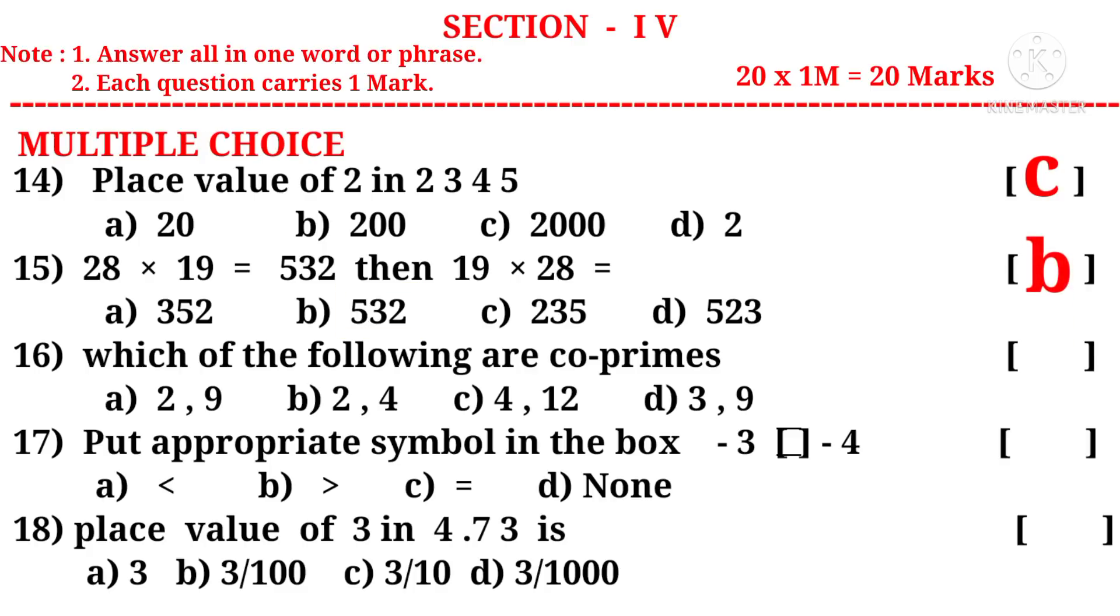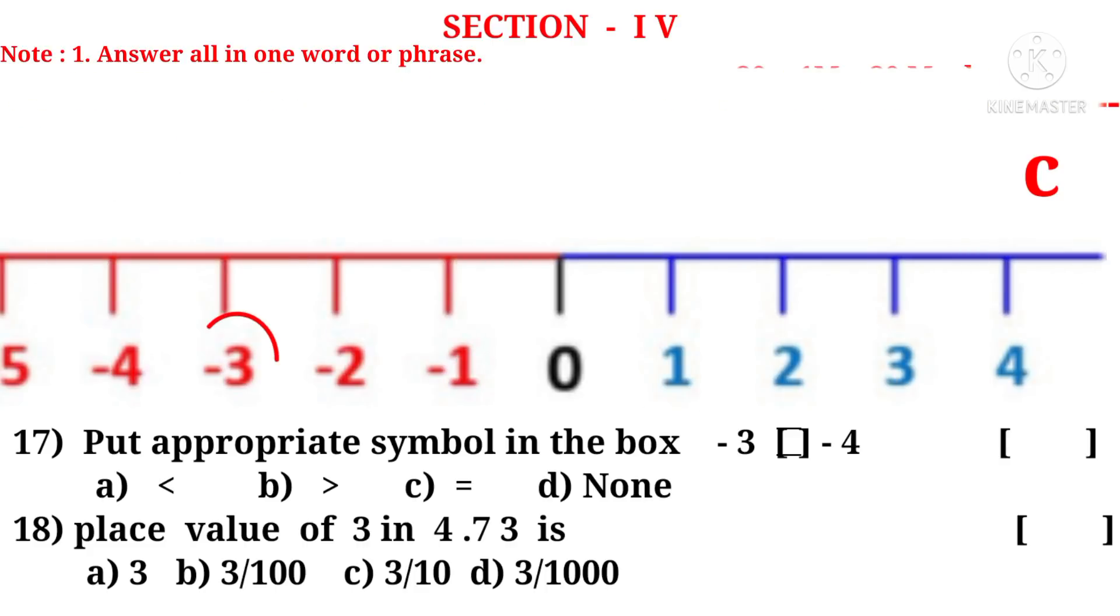Sixteen: Which of the following are co-primes? Observe the word co-primes means the numbers which have the only common divisor equal to 1. Here observe the numbers 2 and 9. Both are divisible by one and only number 1. And the remaining numbers are divisible by more than 1. So the correct choice is A. Now seventeen: Put appropriate symbol in the box. Minus 3 box minus 4. Observe the line of integers. Minus 3 is on the right side of minus 4. So minus 3 is greater than. So put greater than symbol. So the correct choice is B.